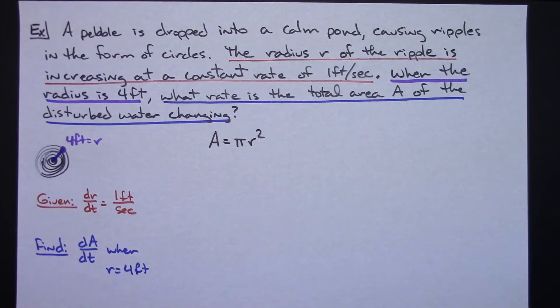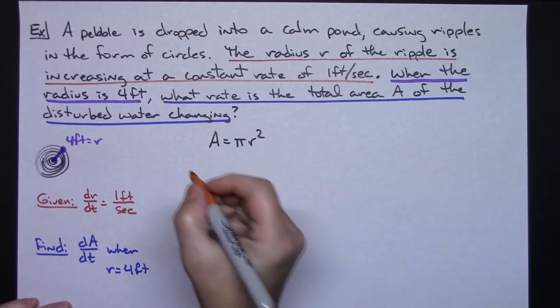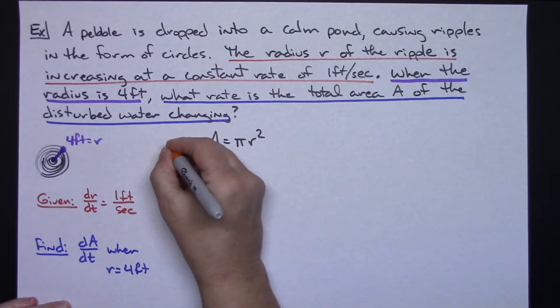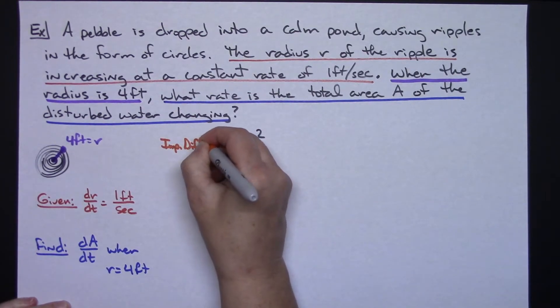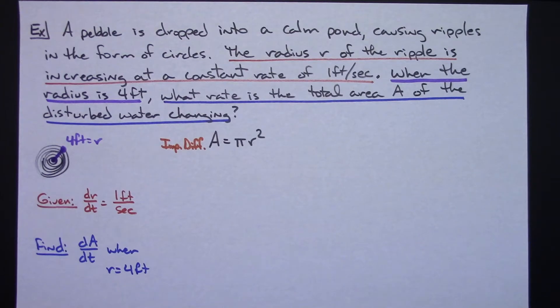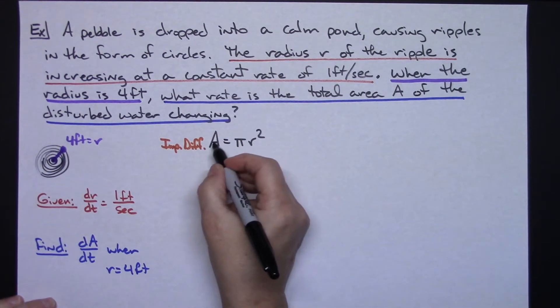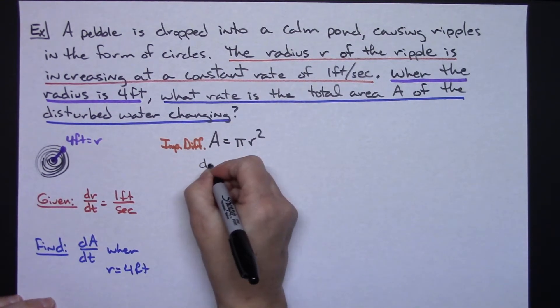That's my formula that I'm going to use, I'm going to implicitly differentiate that. I'm going to implicitly differentiate that so let's put it right here. I'm going to implicitly differentiate it with respect to time. So this is going to become dA/dt equals the pi is going to stay there.